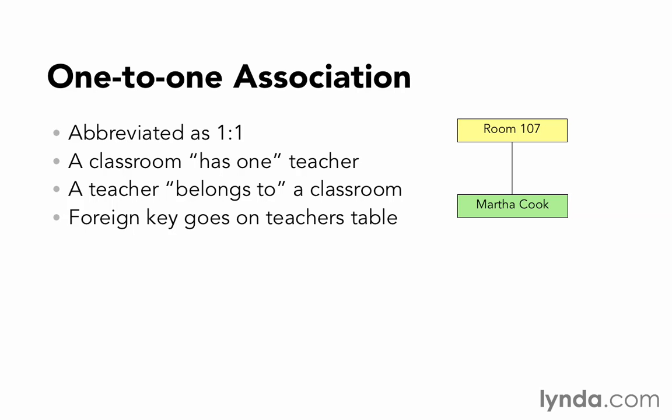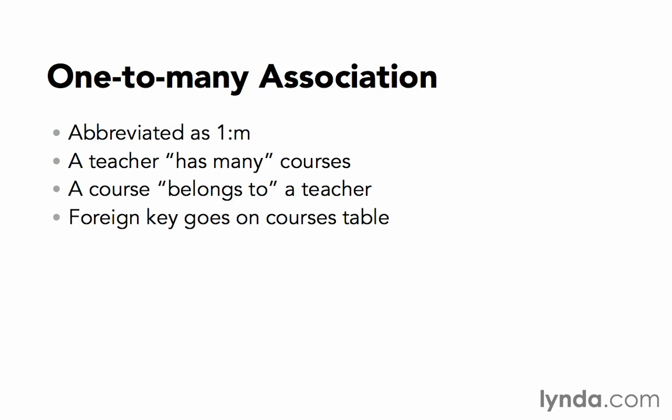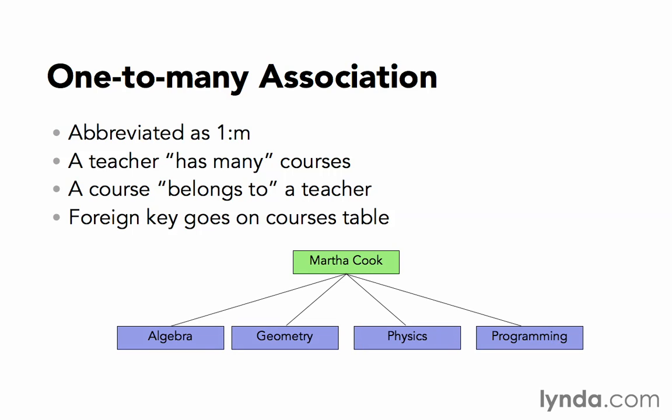The second relationship type is one-to-many. An example of that would be how a teacher has many courses. We could also say that a course belongs to a teacher. In this case, the foreign key goes on the courses table. If we diagrammed it, it might look something like this. Martha Cooke would be the parent record, and algebra, geometry, physics, and programming would be the child records. Each one of them would contain a foreign key — they would each have the ID for Martha Cooke so that we would know that algebra was assigned to Martha Cooke, geometry was assigned to Martha Cooke, and so on.